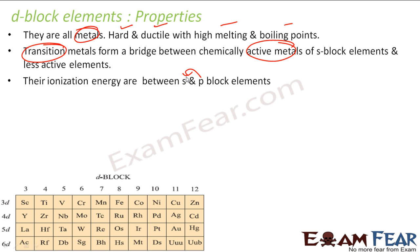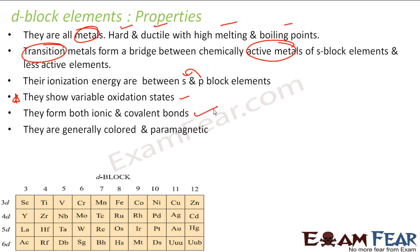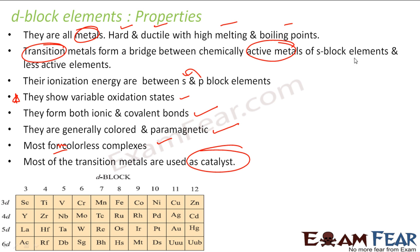Their ionization energy is between s and p-block. We will discuss what this is all about in the next two slides. They also show variable oxidation state. This concept will be clear in the next chapter when we discuss actual reactions. They form both ionic and covalent bonds. They are generally colored and paramagnetic. Most generally form colorless complexes and they are used as catalysts.